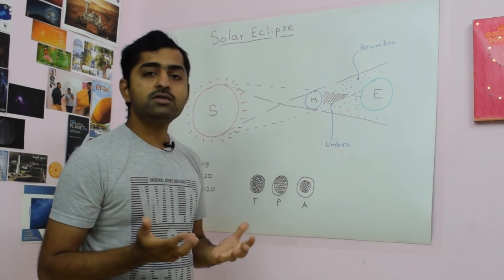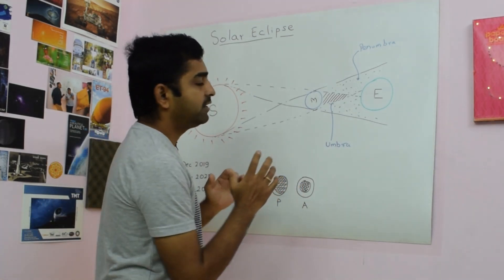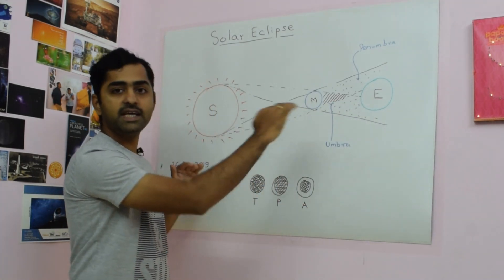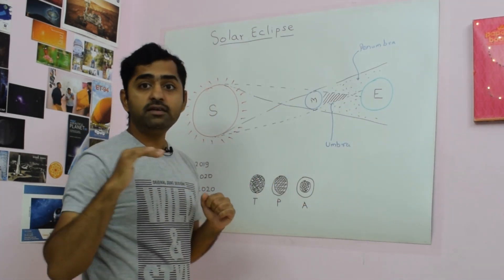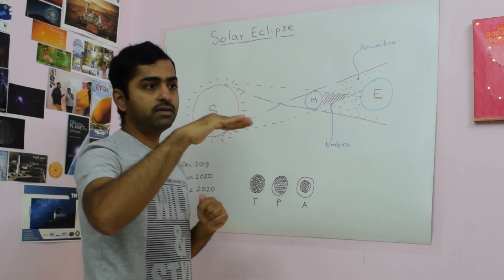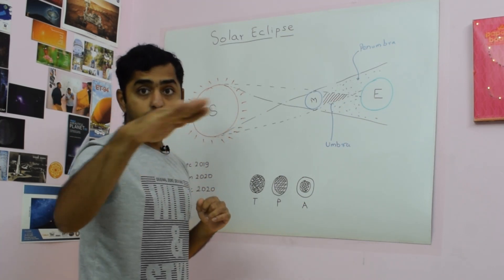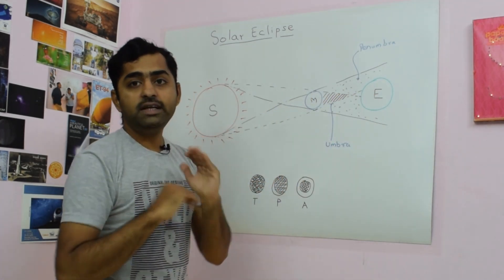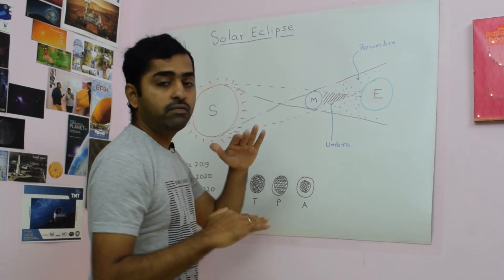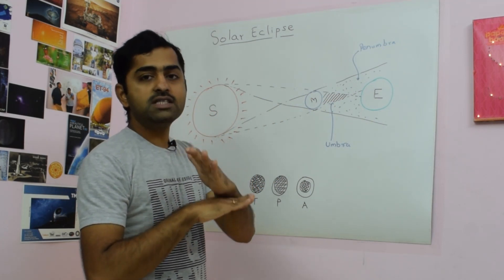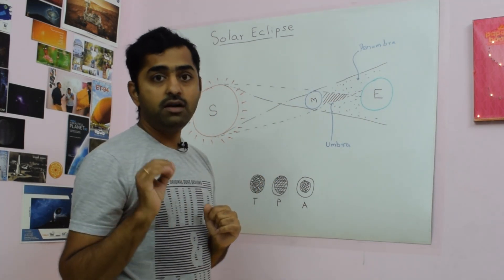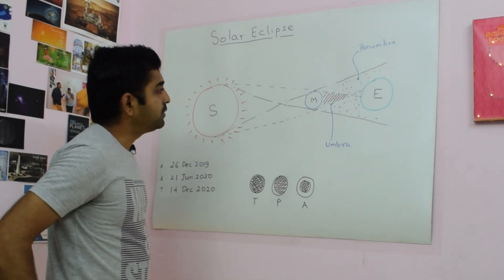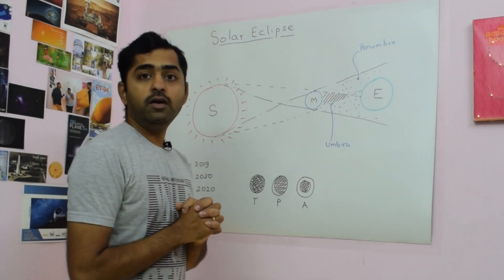Now for an Annular Solar Eclipse to happen, there is a special condition required. Earth, Moon and Sun should be in the same line. Moon should be at the lunar node, which means Moon, Earth and Sun are in the same plane. As you know, the Sun-Earth plane and the Moon-Earth plane are relatively tilted by 5 degrees, and if these planes are coinciding — that is called the lunar node — and if the Moon happens to be at the lunar node at that time, you can experience the eclipse.